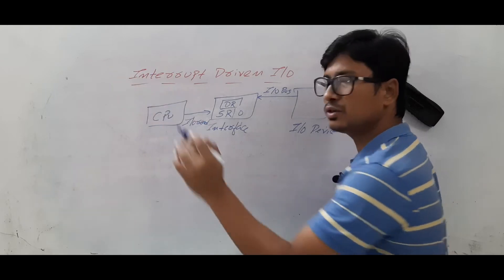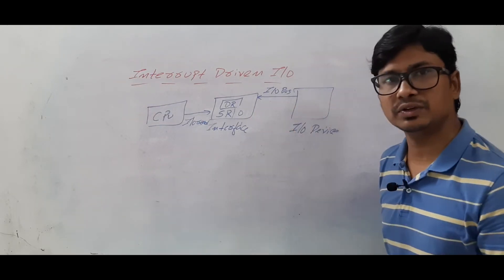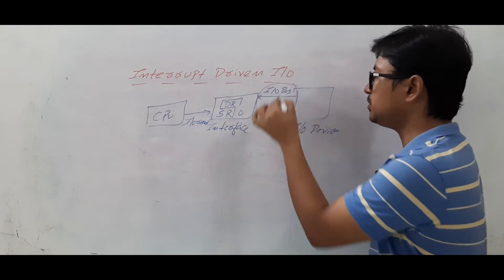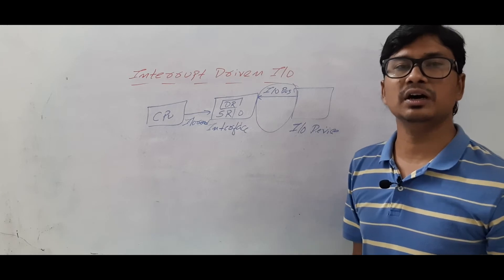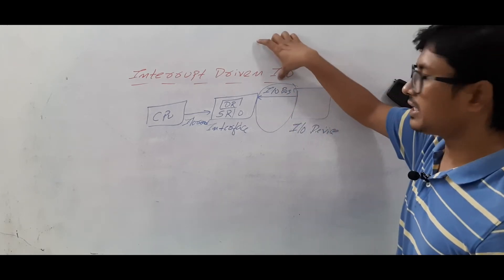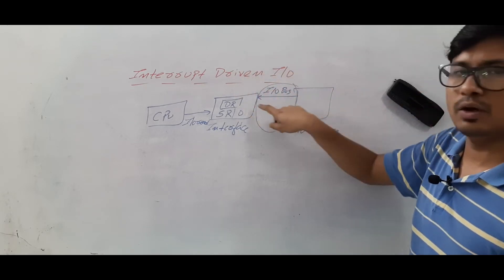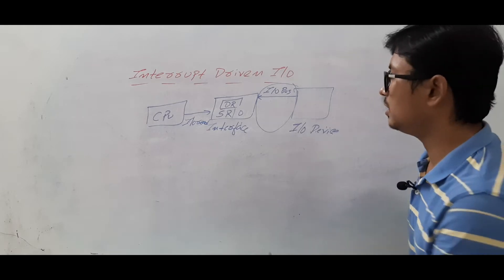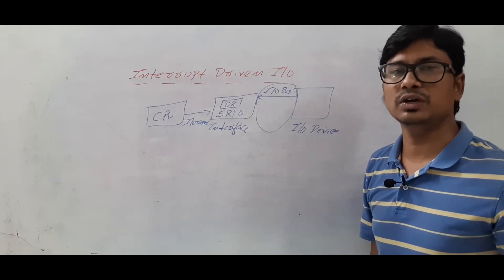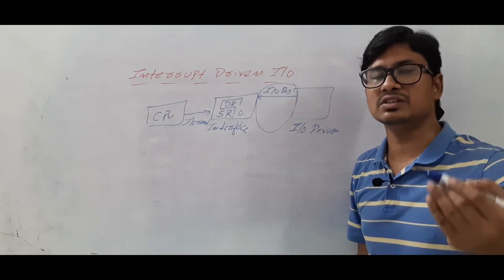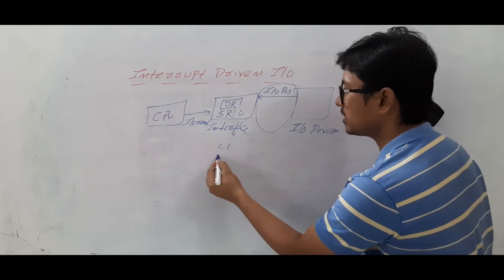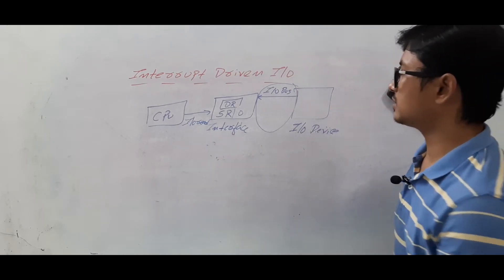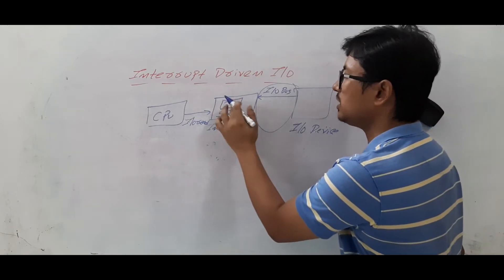In the meantime, the IO device transfers data using the IO bus. The communication between the IO device and interface uses the three-way handshaking mechanism — data valid bit is enabled, data is transferred, and then the interface sends an acknowledgement. Once data is stored in the data register temporarily, the process continues.